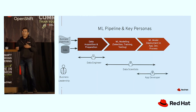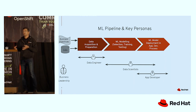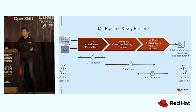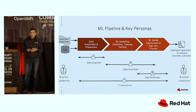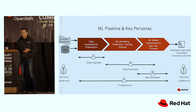We take certain models and deploy them using the app dev process, with application developers involved in this phase. Data scientists are also involved to make sure the right models are deployed and to handle any data drift requiring retraining. At the end, what you see is an intelligent application which meets business objectives. Across all these phases, the IT operations folks are common — they're responsible for all day-to-day operations in the pipeline.